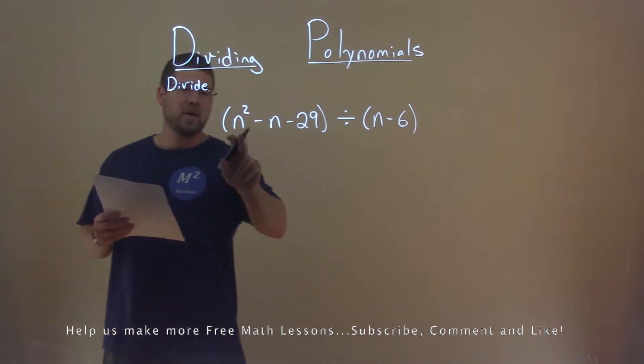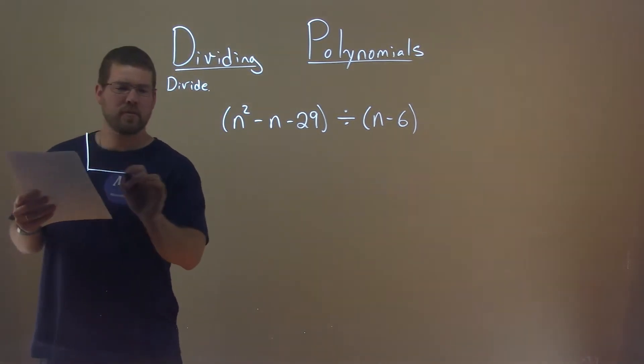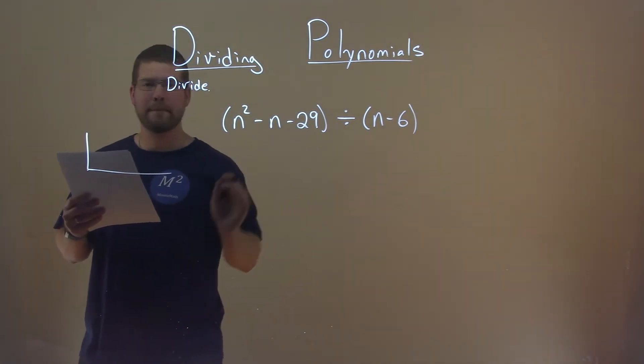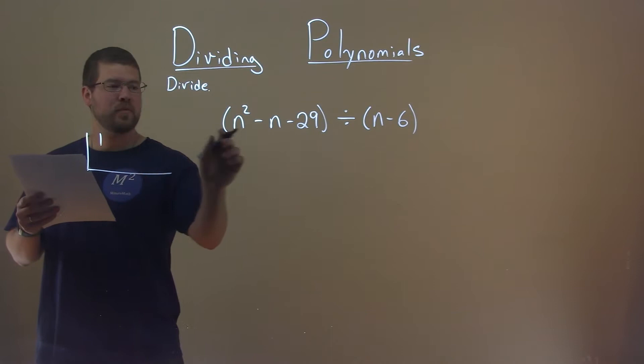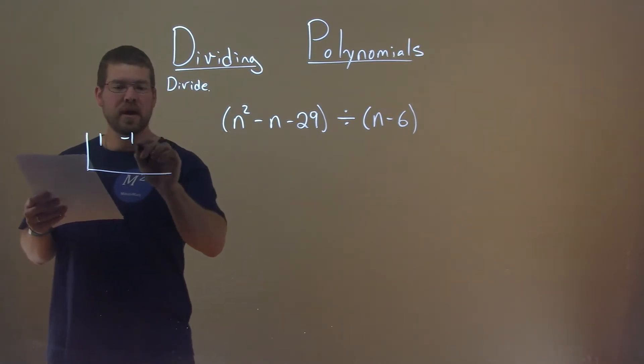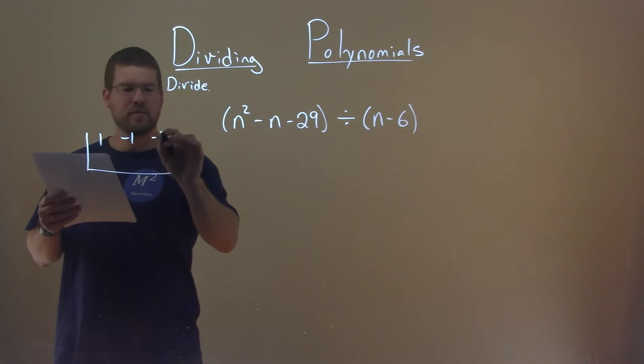Well, we're going to use synthetic division here. So I start with my first part, n squared minus n minus 29, and we're looking at the coefficients. We have a 1 in front of the n squared, negative 1 in front of the n, and then lastly a negative 29.